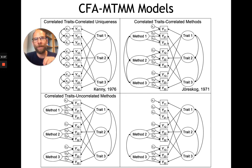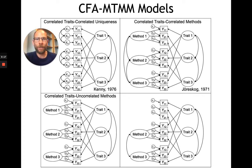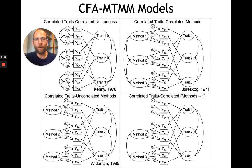There might be a shared bias between mother and father reports relative to self-reports, because they have a shared parent perspective. If we can't allow those shared biases to be represented in the model by a method factor correlation, we might end up with a model that isn't correct. The next model addresses that issue, in addition to the over-parameterization issue found in the correlated traits correlated methods model. The model in the lower right-hand corner is called the correlated traits correlated methods minus one model.